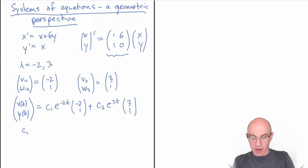Which means that the solution vector (x, y) is just going to be the first part of this: e to the minus 2t multiplied by (-2, 1). So there's two ways of drawing this graphically.